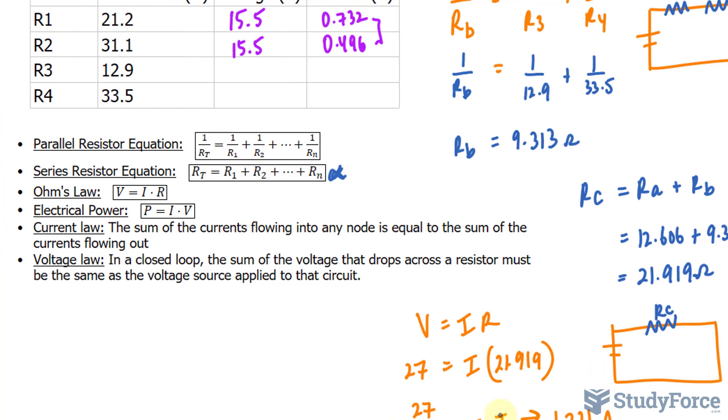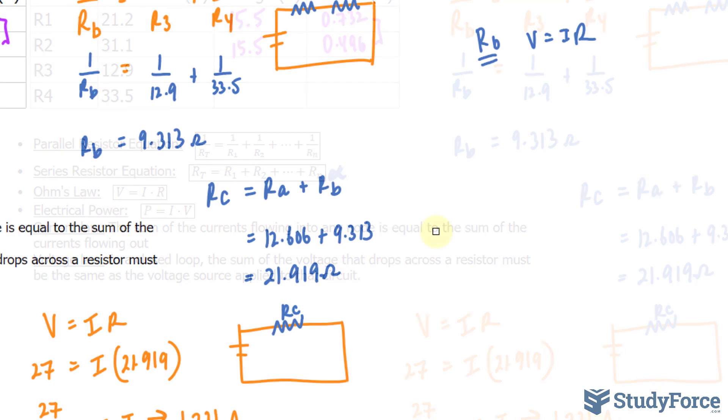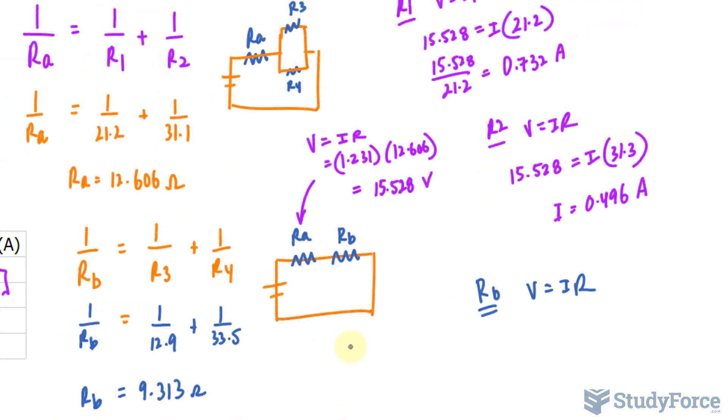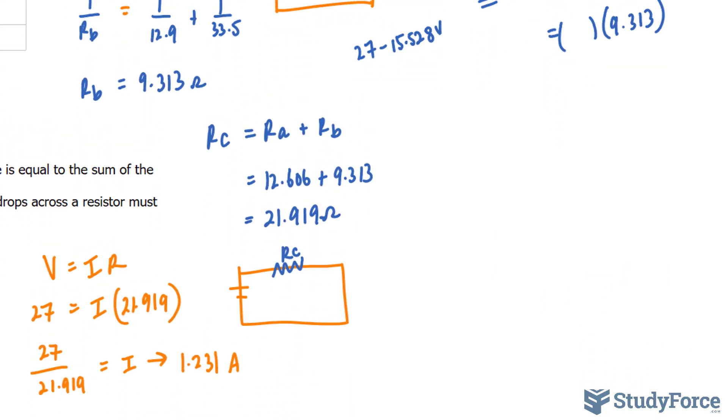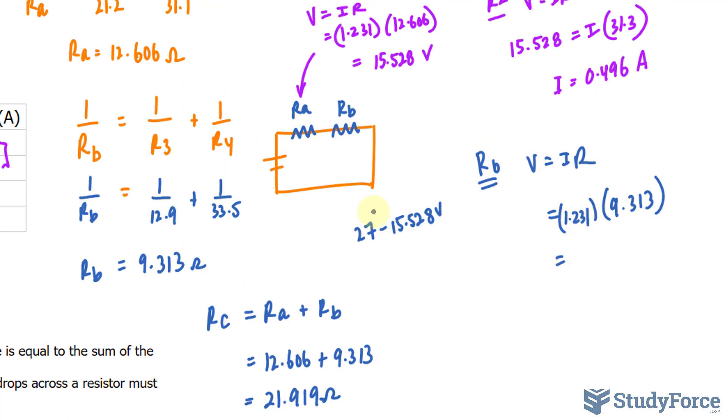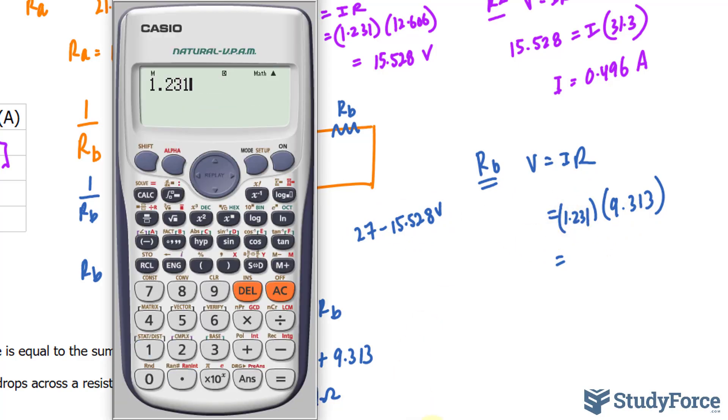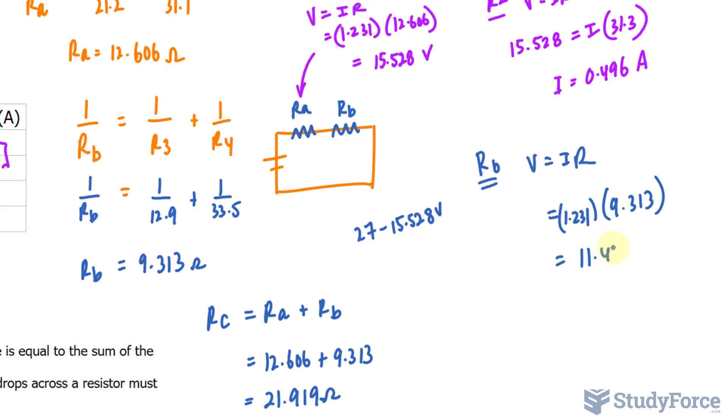And that applies to the voltage law. We're in a closed loop. The sum of the voltage that drops across a resistor must be the same as the voltage source applied to that circuit. What this means is that the voltage for RB will be 27 minus the reading at RA, which was 15.528. You can do it this way, or you can do it systematically by simply taking the resistance of 9.313, which we found earlier, and multiplying it to the current, which we found earlier as well, which is 1.231. So, subtracting 15.528 from 27 should be technically the same as multiplying these two out. 1.231 times 9.313. And we get 11.464 volts.